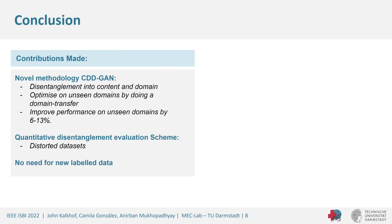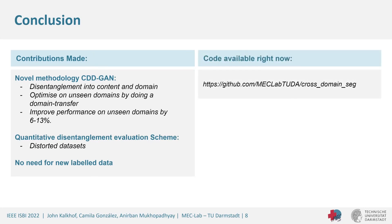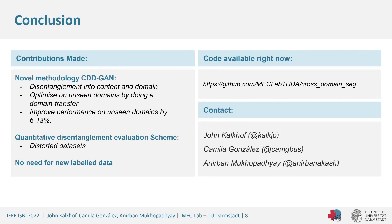In conclusion, our novel methodology CDDGAN uses disentanglement into content and domain, allowing us to optimize on unseen domains by domain transfer and improve performance on unseen domains by 6 to 13% — all without the need for any labeled data. We also introduce a quantitative disentanglement evaluation scheme using distorted datasets. Please have a look at our paper or access the code, which is available now. If you have any questions, please contact us on Twitter. Thank you for your attention and have a great day.